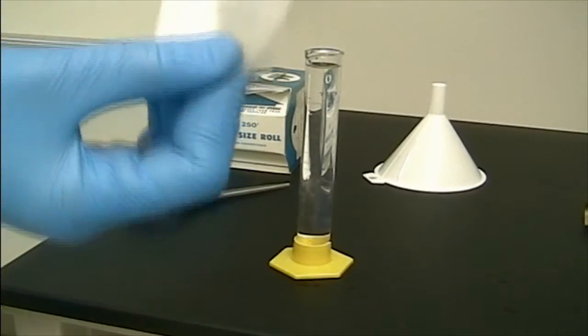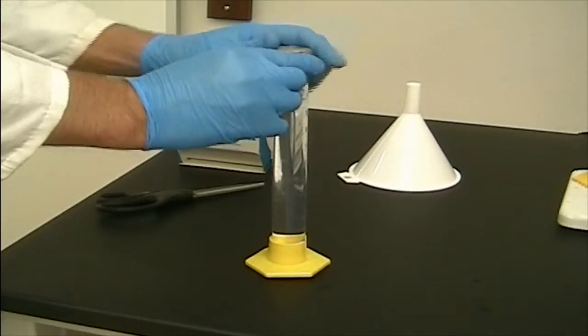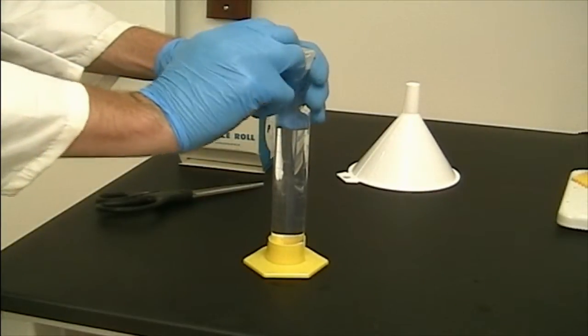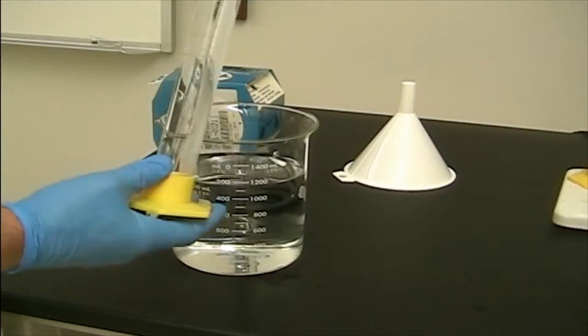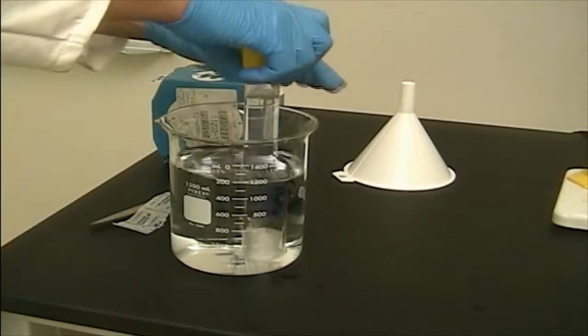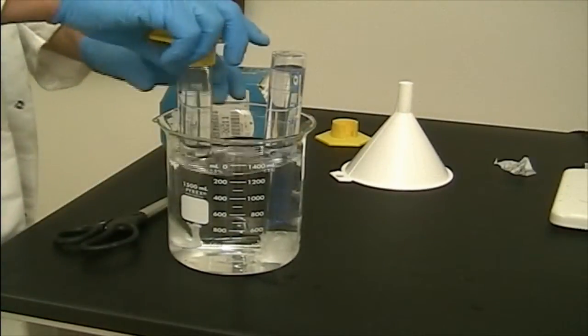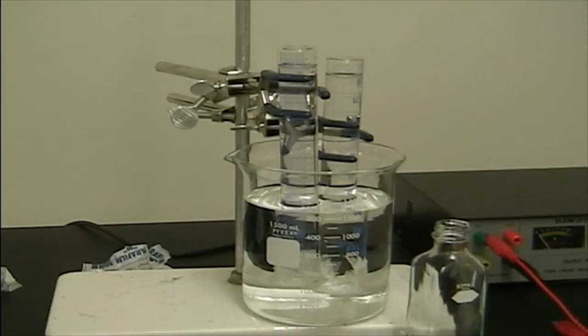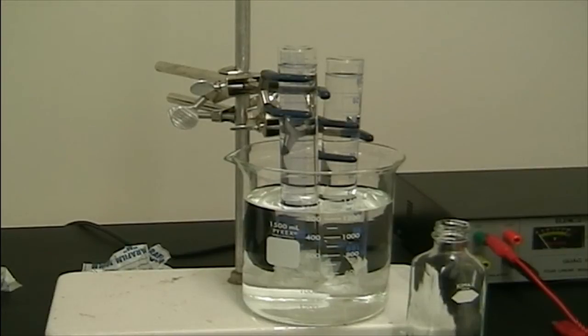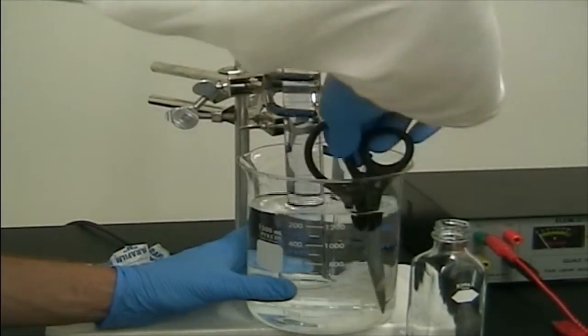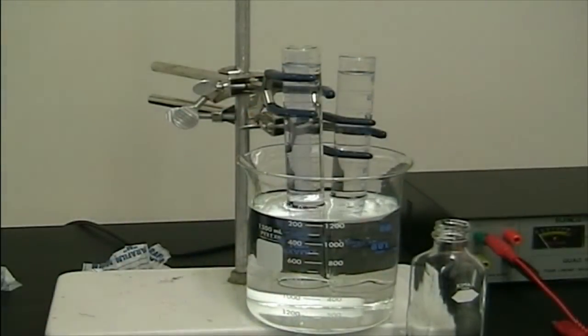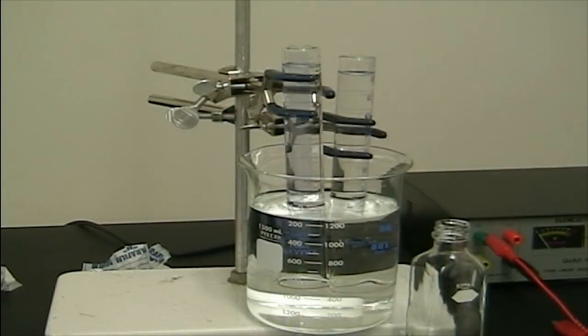The mouth of each graduated cylinder was then sealed using two pieces of 6x6 cm parafilm. Being careful to avoid spillage, each graduated cylinder was then inverted and quickly submerged mouth-side down in the beaker. With both cylinders now submerged mouth-side down, the parafilm was carefully removed using long scissors or forceps. This successfully ensured that the graduated cylinders were filled roughly to the 100 milliliter mark with aqueous 5 normal sodium hydroxide.